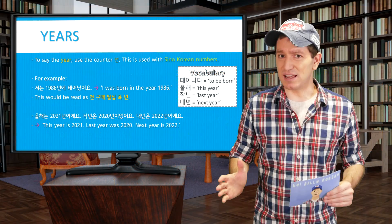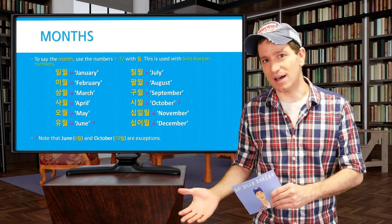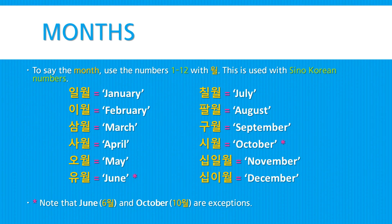To say the month, use the numbers 1 to 12 together with 월, used with Sino-Korean numbers. There are two exceptions — pay attention to those: January 일월, February 이월, March 삼월, April 사월, May 오월, June 유월, July 칠월, August 팔월, September 구월, October 시월, November 십일 월, December 십이월. Note that June and October are the exceptions.